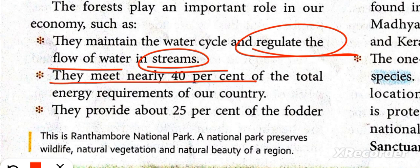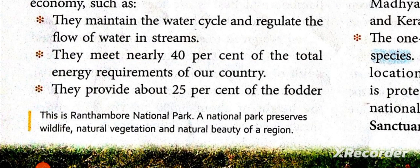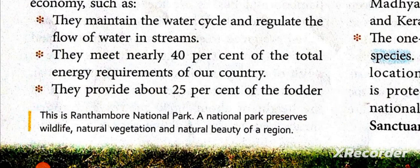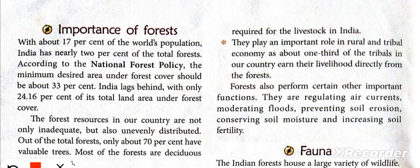Forests meet nearly 40% of total energy requirements. They also provide about 25% of fodder for cattle. Livestock such as cows, goats, and sheep have multiple uses and are an economic asset, so a large amount of fodder is needed, and 25% of this comes from the forest.